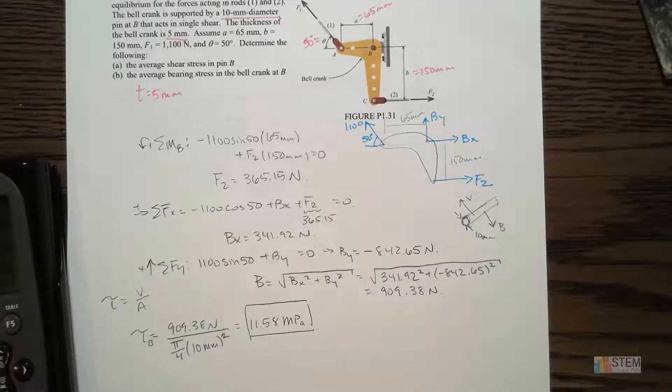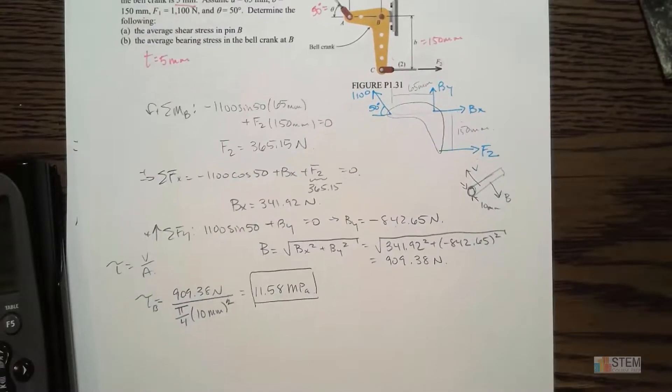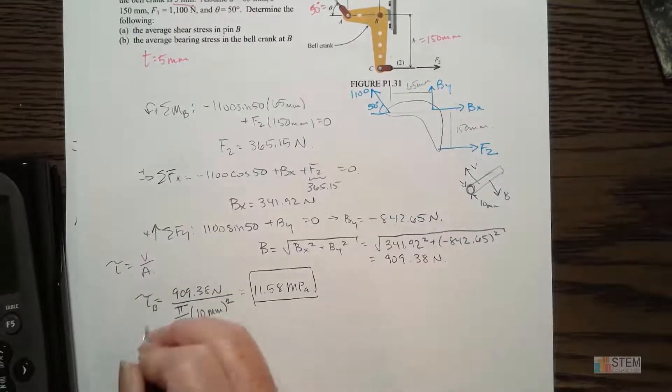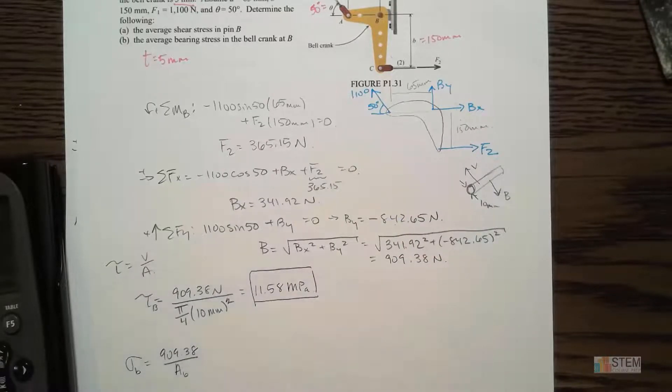So now we want to find the average bearing stress in the bell crank at B. Remember you get bearing stress when you have two surfaces that are applying compression forces against each other. Now, when we do bearing stress, it's the same general equation. It's a normal type stress, so instead of the little tau, we're going to have a sigma because sigma represents a normal stress. And we're going to have our force, which is still the 909.38. But you've got the bearing area, bearing stress area. So it's not this same area because this was the area of the cross section of the pin. This is a different area.